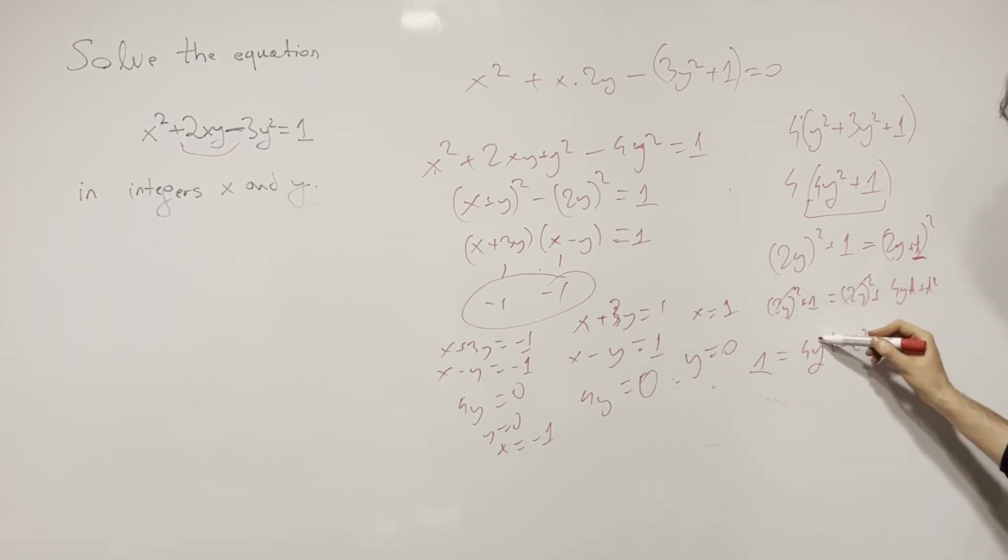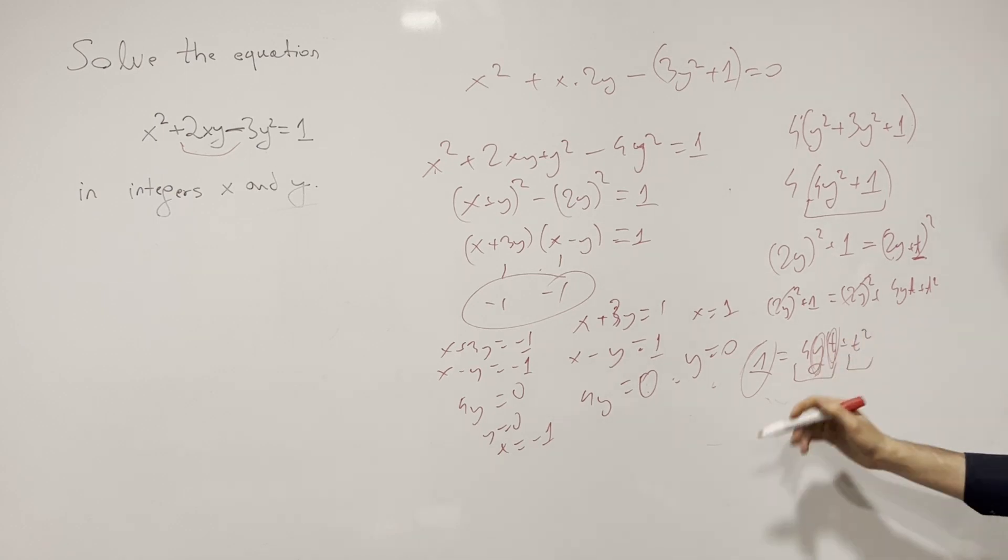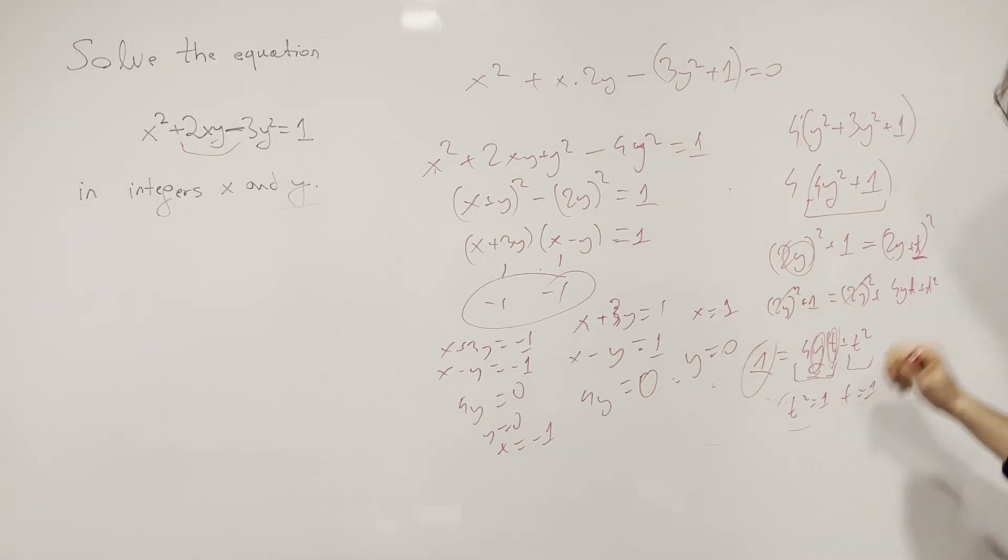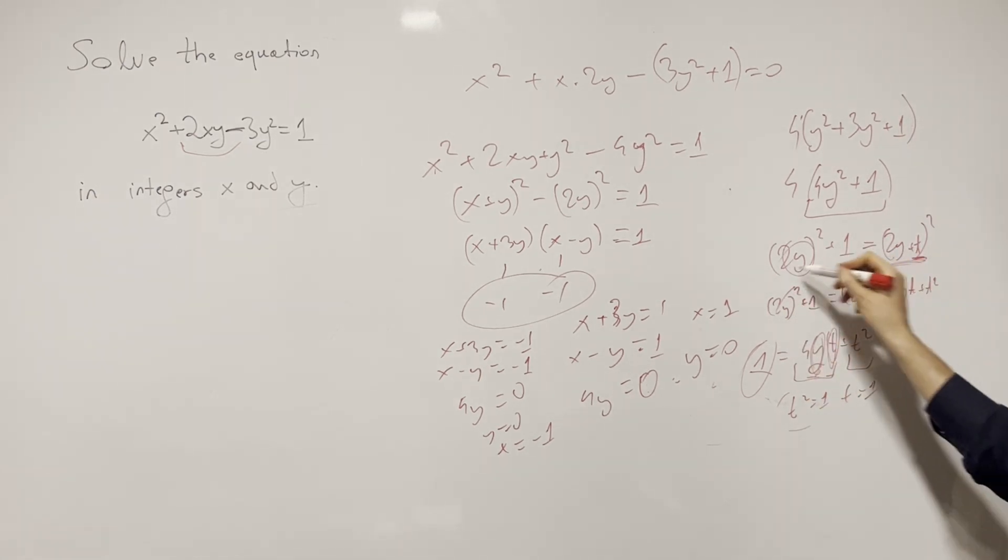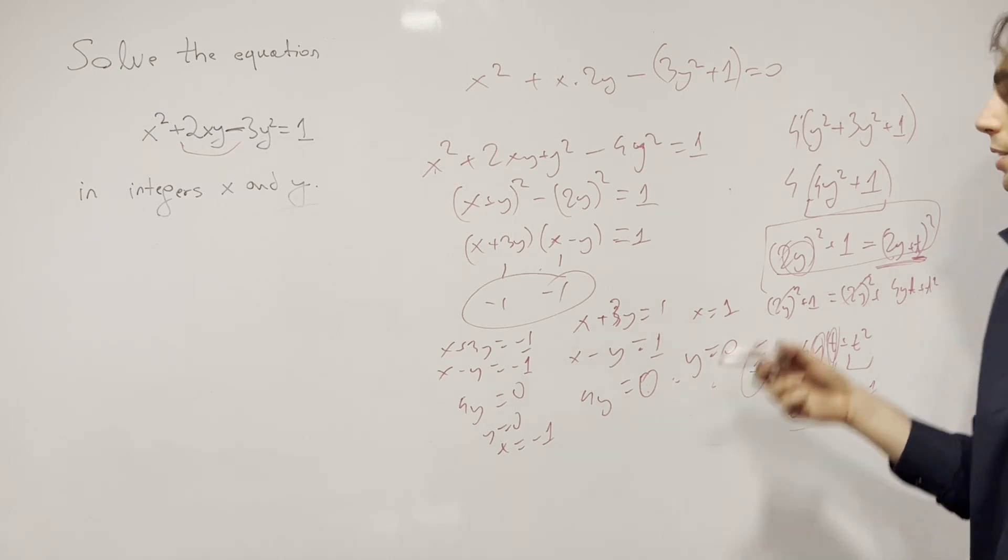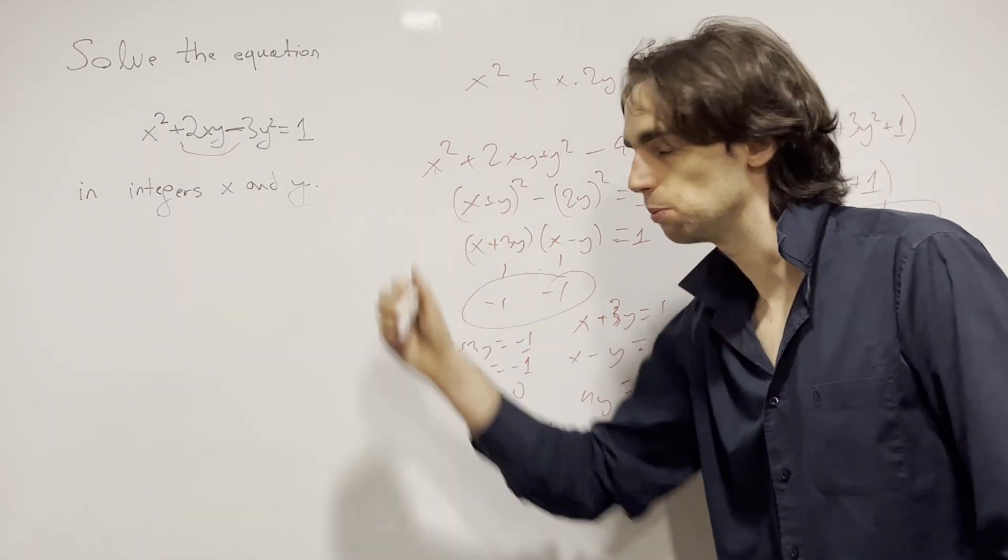So that means if y or t, if one of these, if both of them were not equal to 0, then this would be at least 4, this would be at least 1, and this could not be equal to 1. And so from there we have that at least one of these has to be 0. If t is 0, then both of them are 0, so that doesn't work out. On the other hand, if y is equal to 0, then we have t² = 1. In other words, t is equal to 1. We're in the positive integers here. But that means we have y = 0. And so we know that actually y needs to be equal to 0 to have this be a square. That's what we've shown.